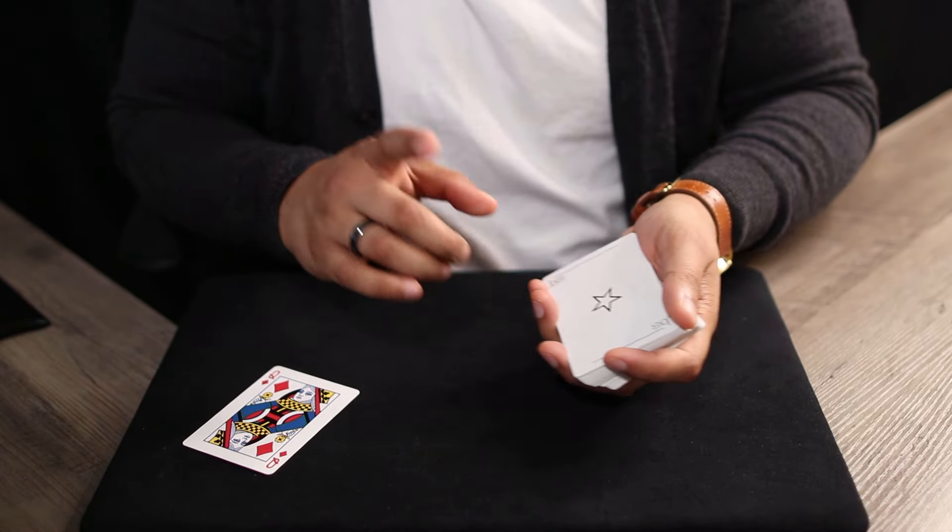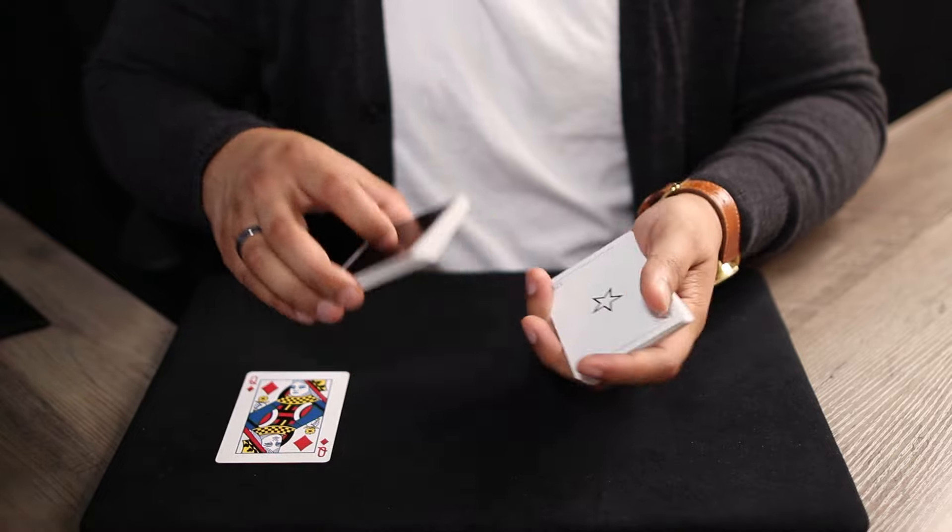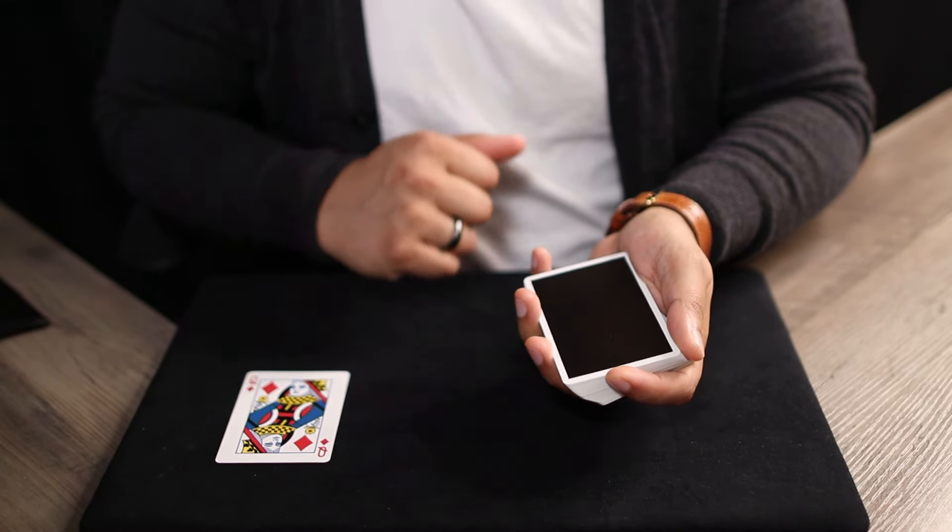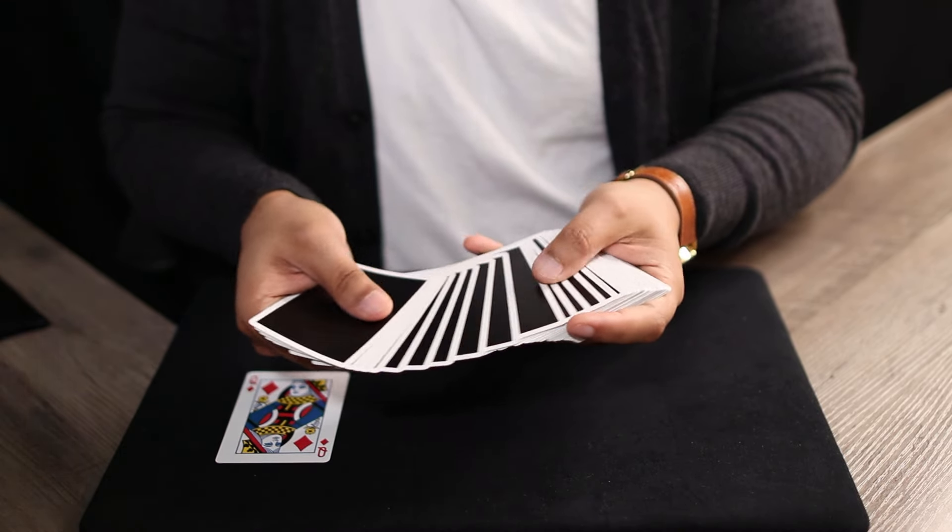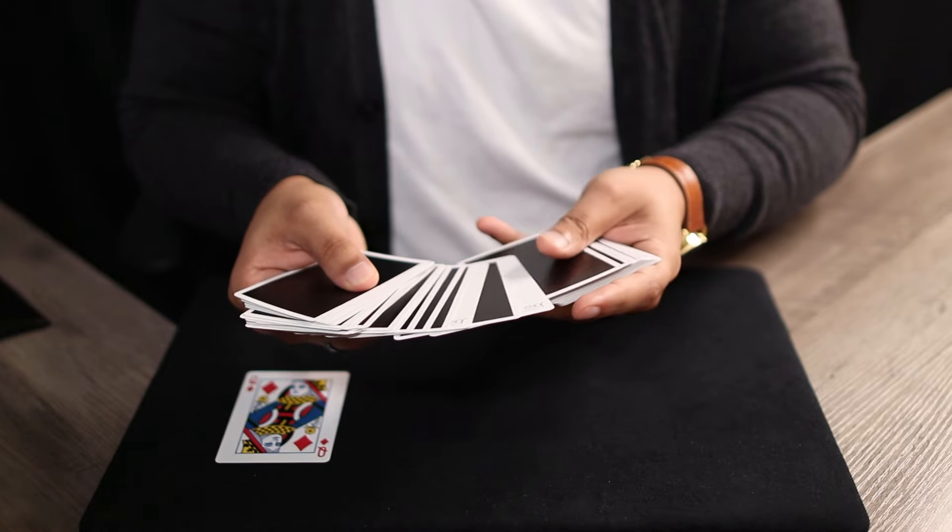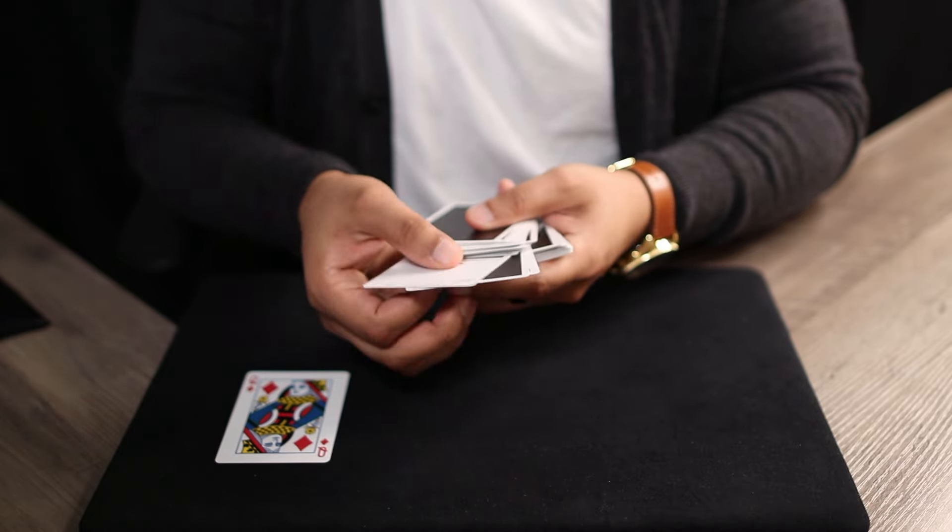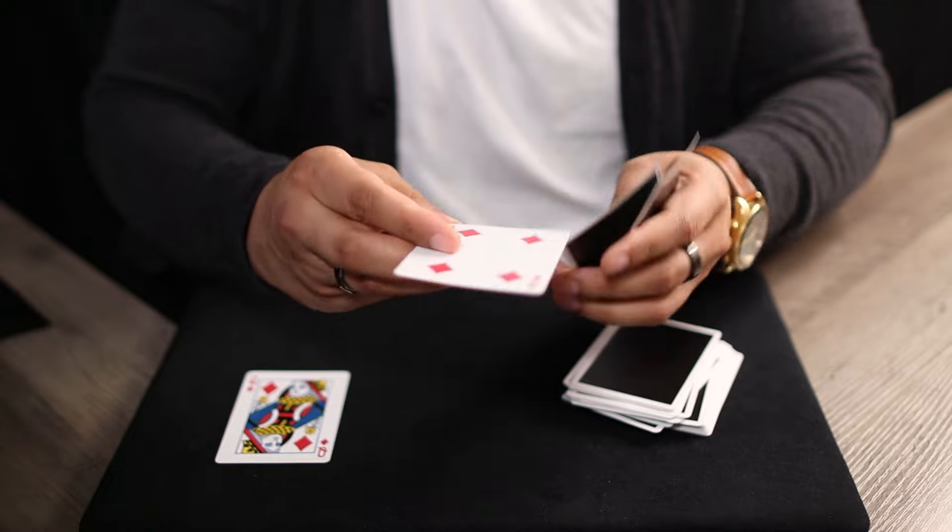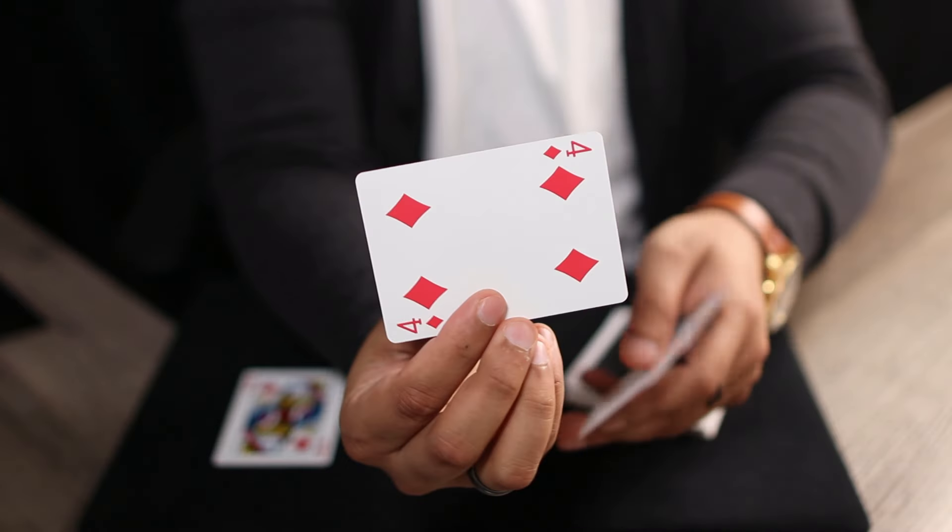So between the two jokers, the most recently selected card after the queen of diamonds, once you give the deck a cut, is of course the four of diamonds. That means once we spread through and find those two jokers, there should be one card sandwiched right in between, and of course that is the four of diamonds. Boom.